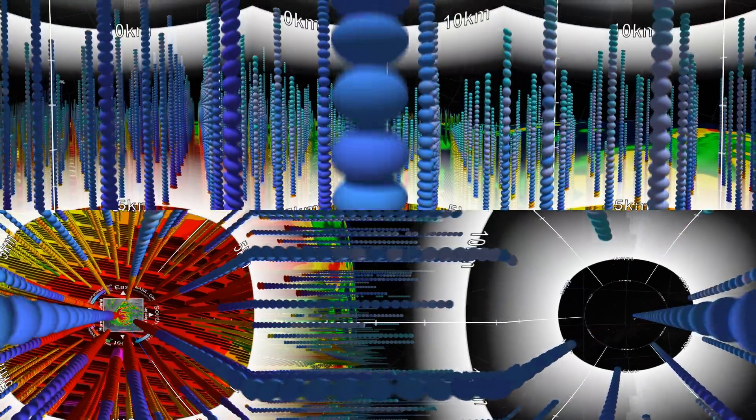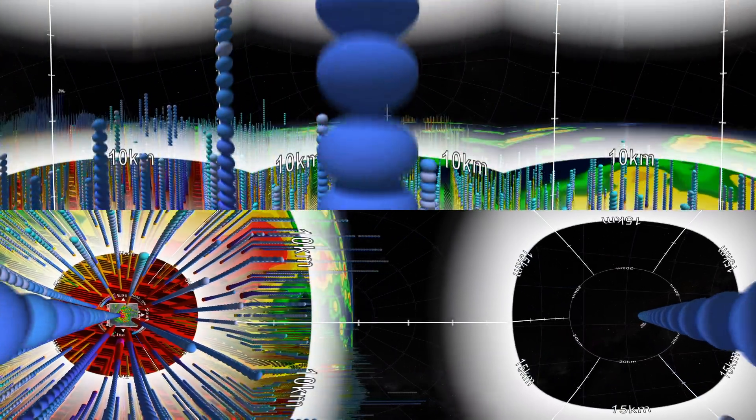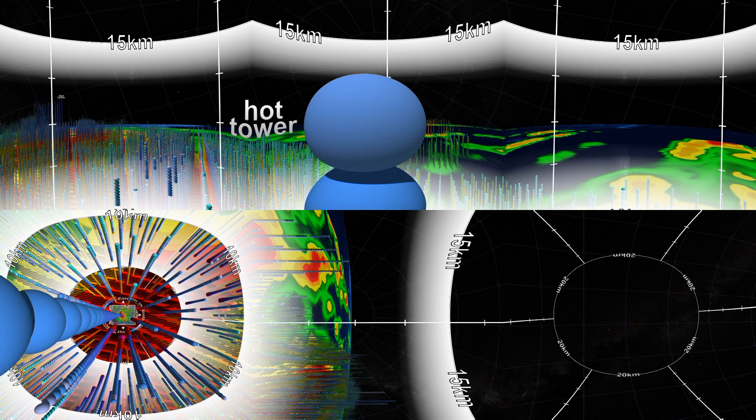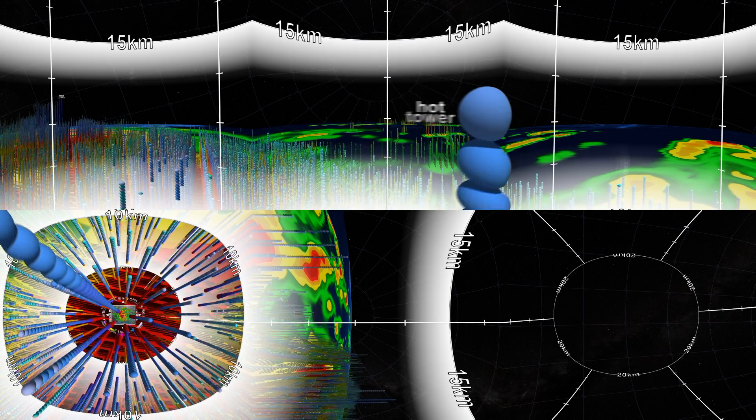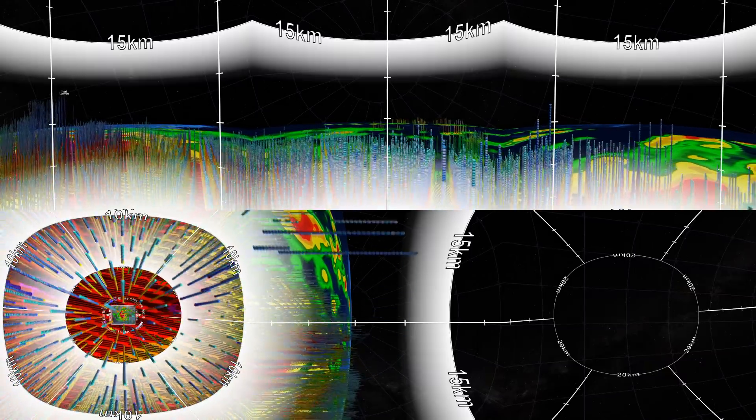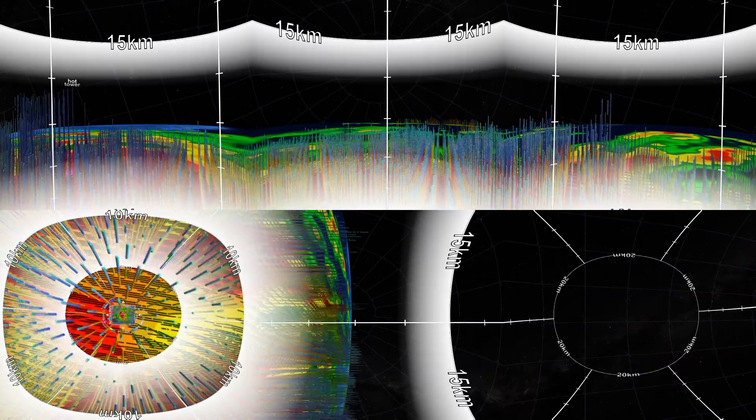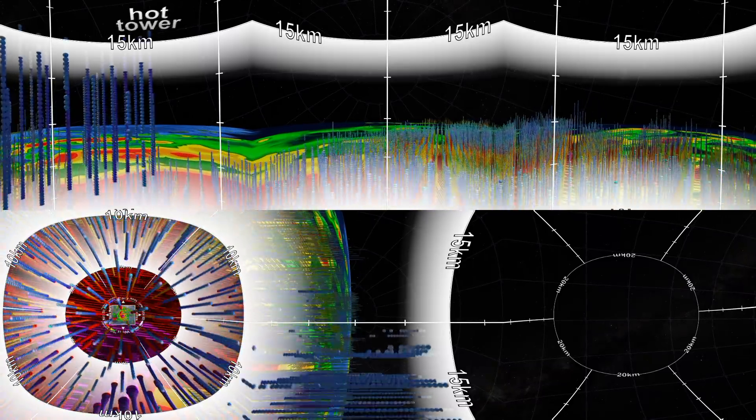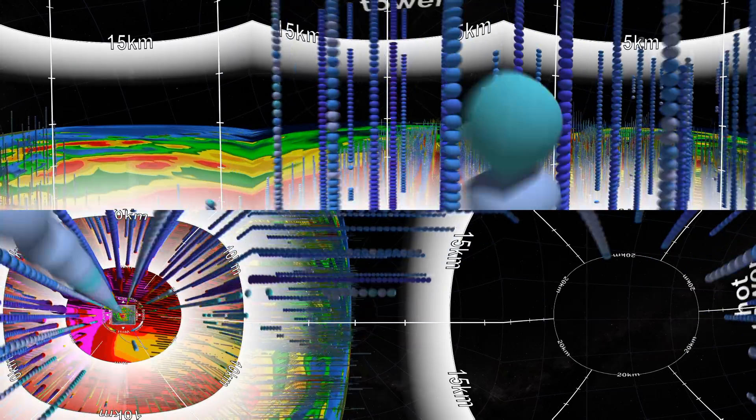We are currently moving up a tall column of intense precipitation. Scientists call these hot towers. Lots of heat and energy are released in hot towers as rising water vapor condenses into precipitation. Most hot towers are between 10 and 15 kilometers high, roughly the altitude that commercial jets fly. Multiple hot towers are common in intensifying hurricanes.